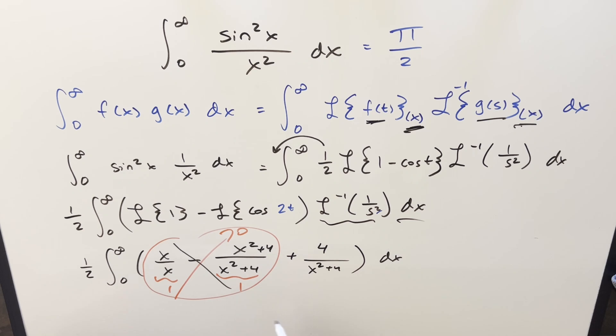So get rid of this, simplify, 4 times a half is going to be a 2 out front, and we're integrating from 0 to infinity of just dx over x squared plus 4.